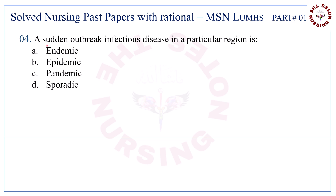Question number four: a sudden outbreak of an infectious disease in a particular region is. Correct answer is B, epidemic.